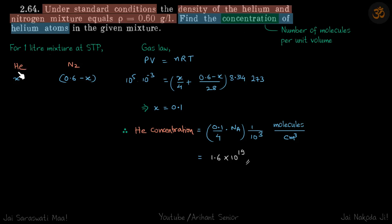So, we are given a mixture of Helium and Nitrogen and the total mass of the mixture is 0.6. Let us assume mass of Helium is X and therefore mass of Nitrogen will be 0.6 minus X.